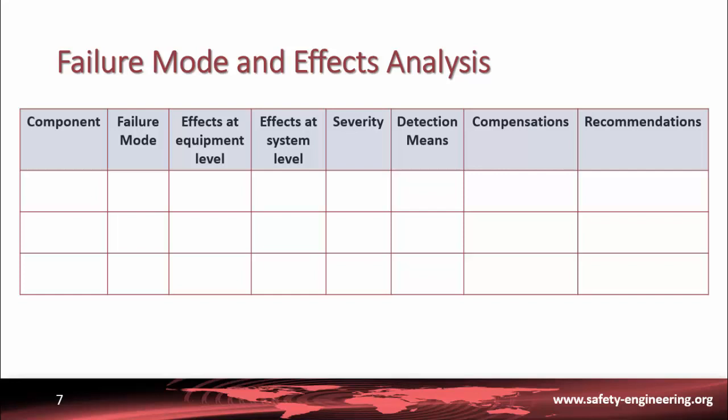We suggest using the following template that has been accepted by our customer. In the column Component, you list each one of the components that make up the converter. In the column Failure Mode, you describe the different failure modes of each component. Then you describe the effects that each failure mode has on the equipment and on the system.